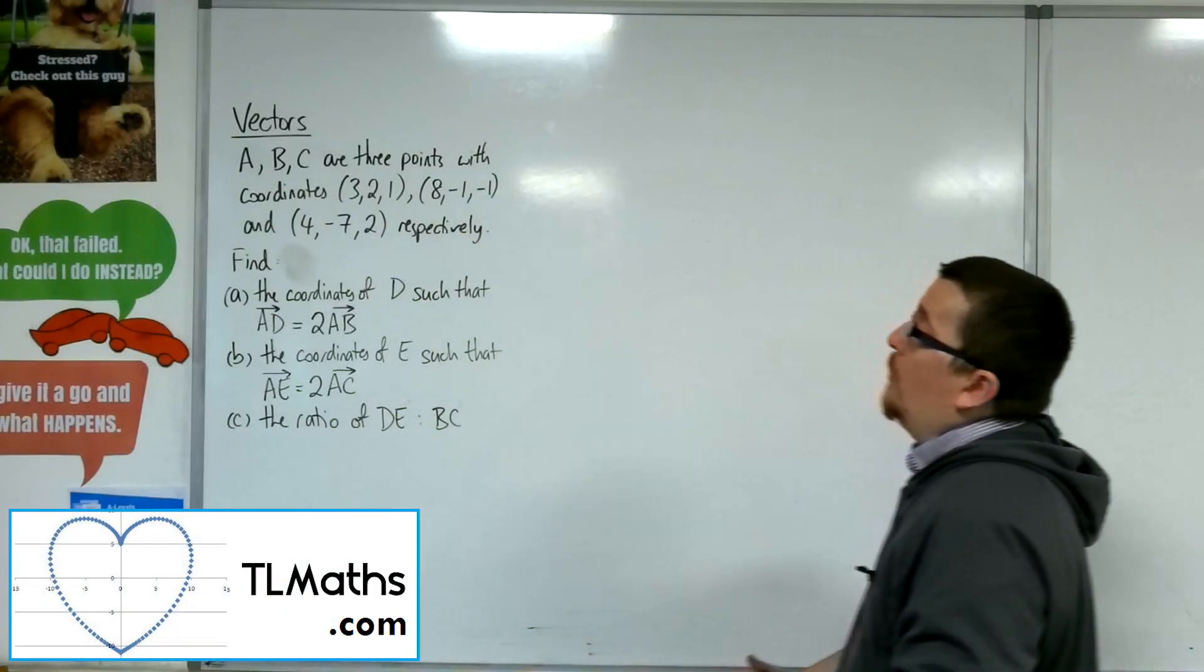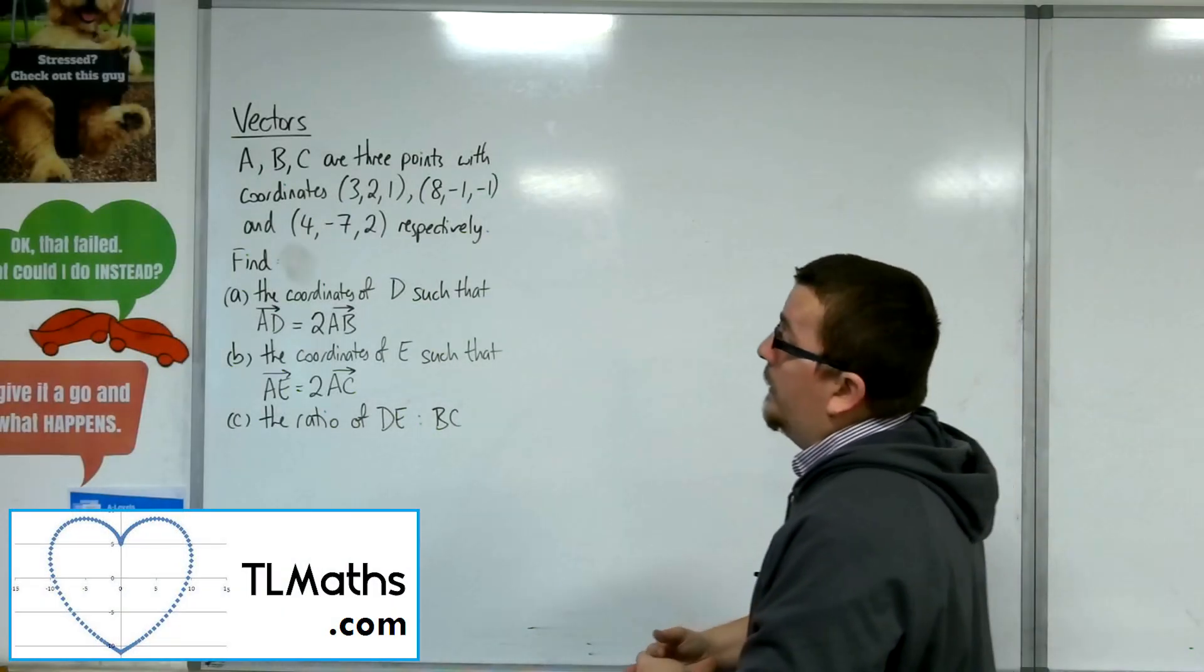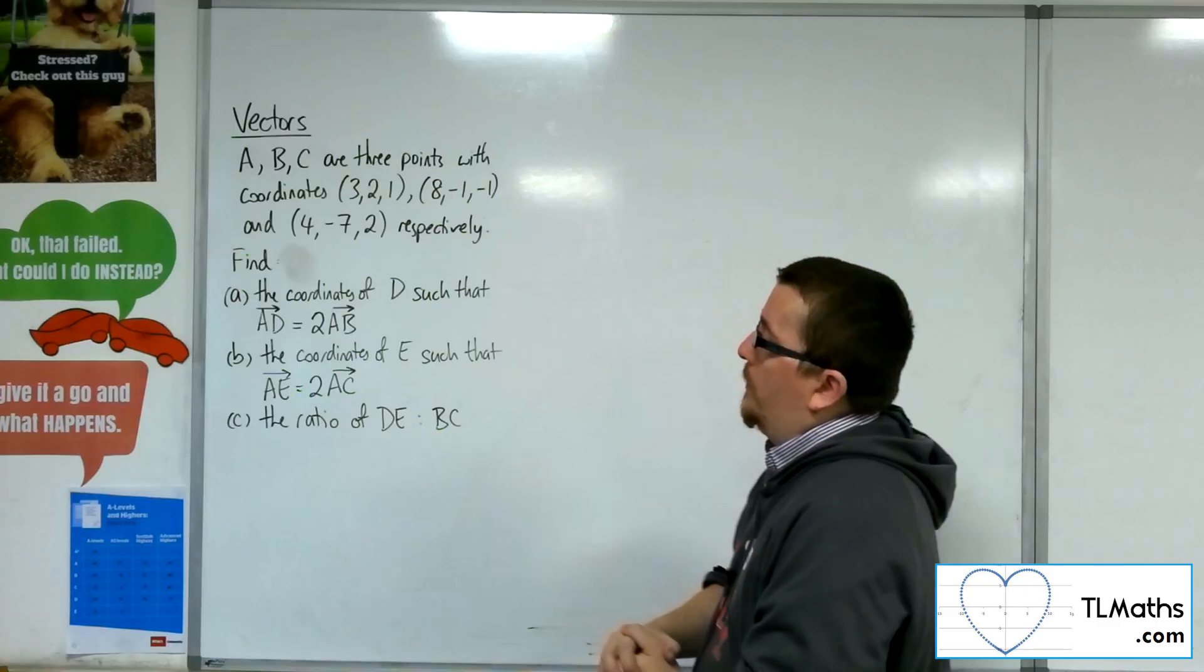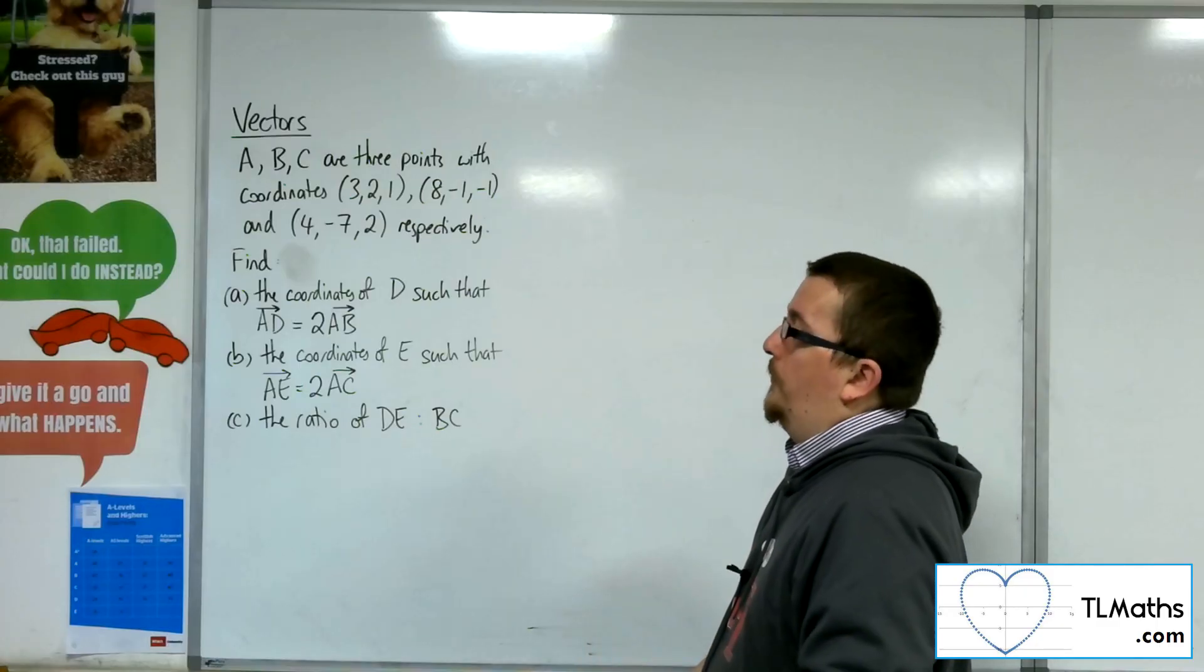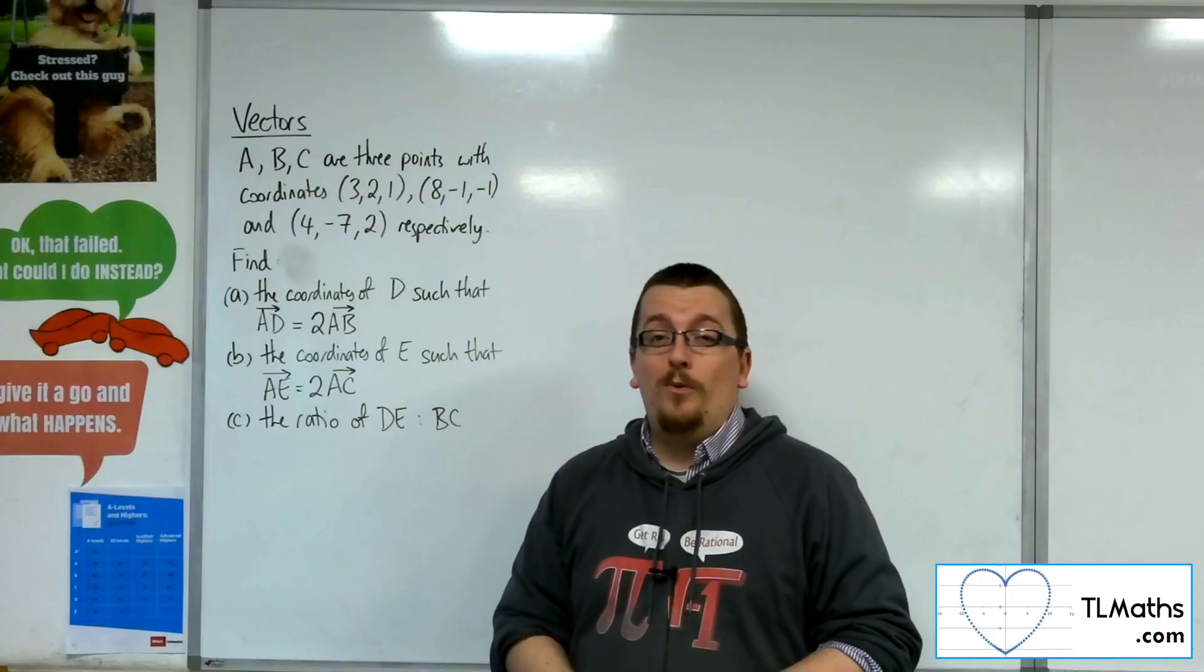OK, so let's say we've got three points A, B and C, and they've been given by these coordinates. Find, first of all, the coordinates of D such that AD equals two lots of AB.